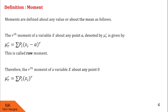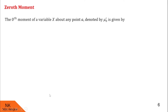Next we are going to see what is the 0th moment. To obtain the 0th moment, we substitute r equal to 0 in that formula. The 0th moment is denoted by μ0' and is given by summation pi times (xi minus a) whole raised to 0. But anything raised to 0 is always 1, so this is simply summation pi. Since summation of probabilities equals 1, we get answer 1. Therefore, the 0th moment of any random variable x about any point A is always equal to 1.